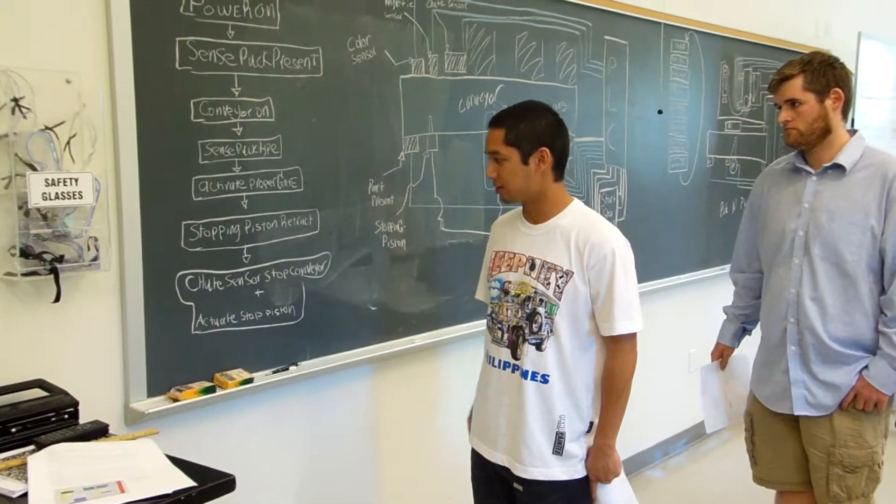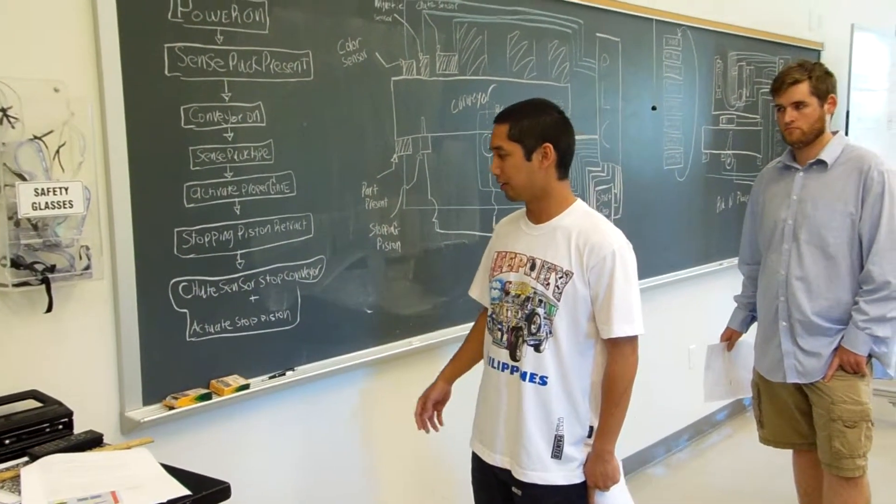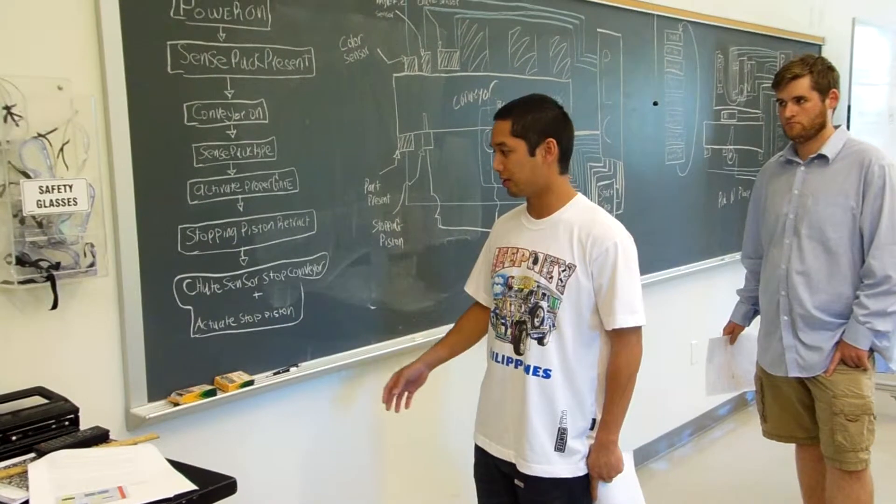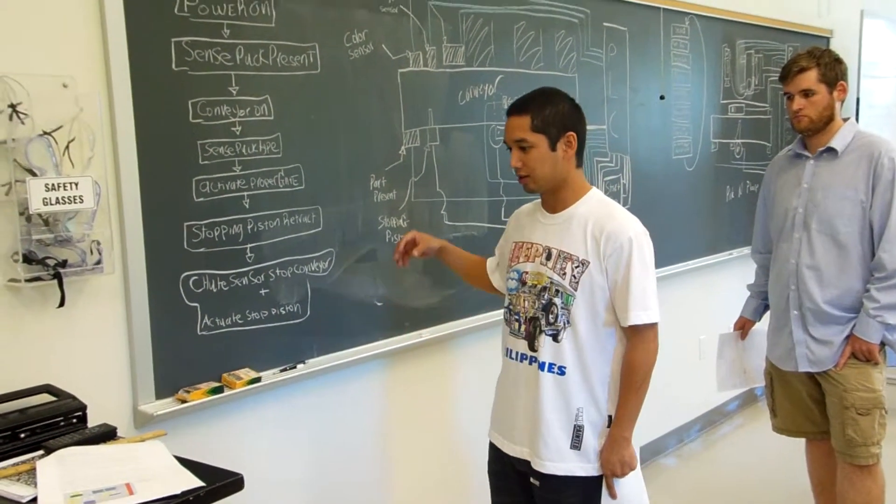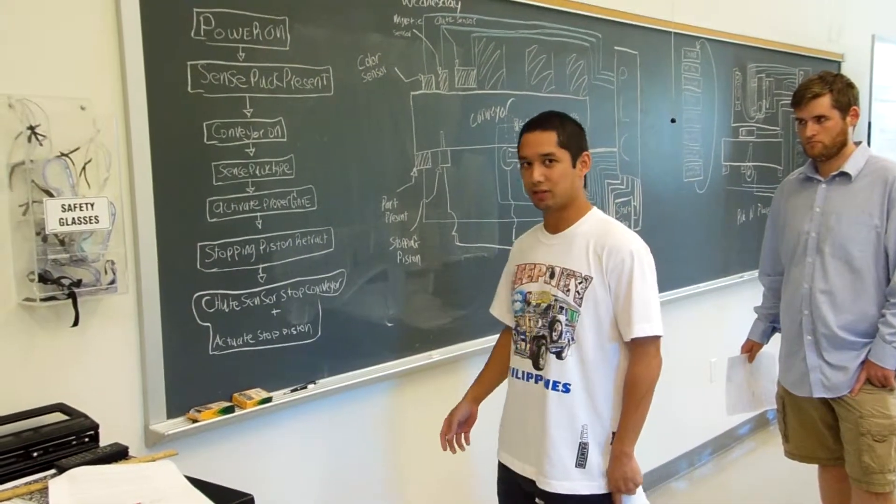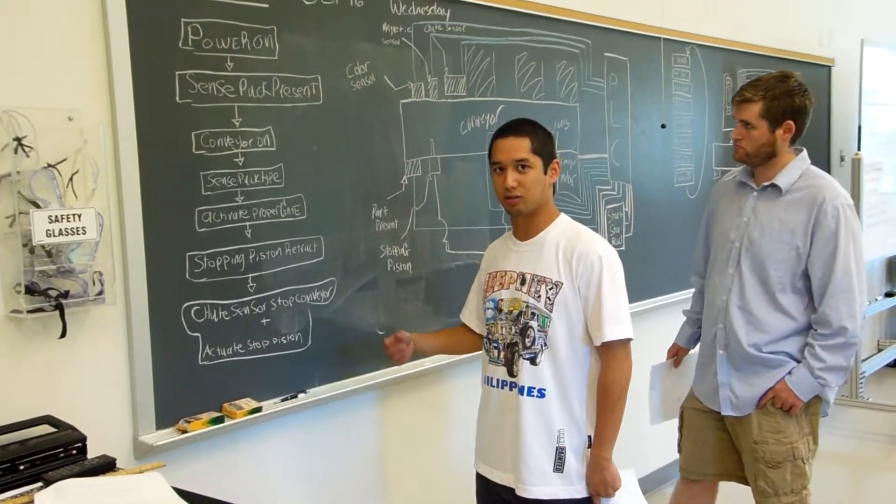And then it'll retract the stopping piston, and it'll go down the conveyor belt and go down the right chute. And at each chute, it has a sensor so that it can tell that puck has fallen in, and it'll stop the conveyor belt and restart.